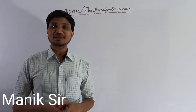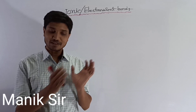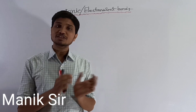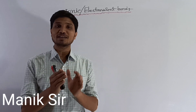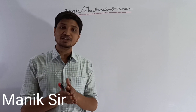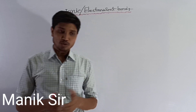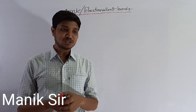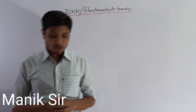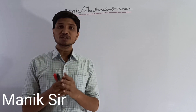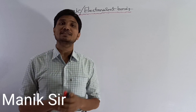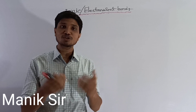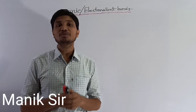Welcome to chemical bonding. We are covering interatomic chemical bonding and intermolecular chemical bonding. The types of interatomic bonding include ionic bonding, covalent bonding, coordinate covalent bonding, and metallic bonding. We have covered parts of this topic previously, and we are now in the second part focusing on ionic bonding.